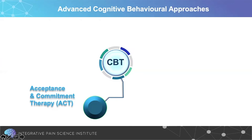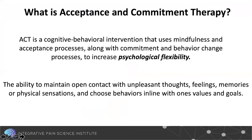If we can't fully change pain-related thoughts and beliefs, we need to turn to other approaches. Acceptance and Commitment Therapy is a more advanced cognitive behavioral approach with less emphasis on changing thoughts, beliefs, or pain itself. ACT uses mindfulness and acceptance processes along with commitment and behavior change processes to increase psychological flexibility — the ability to maintain open contact with unpleasant thoughts, feelings, memories, and physical sensations, while choosing behaviors in line with your personal values or goals.